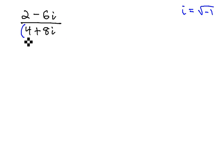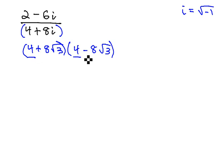However, we know from seeing radical expressions, for example, if there was a square root of 3, we would multiply by 4 minus 8 square root of 3, or we would multiply by the conjugate, same terms, opposite sign.